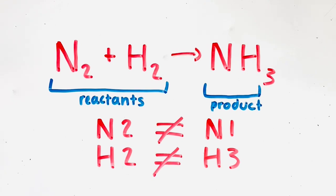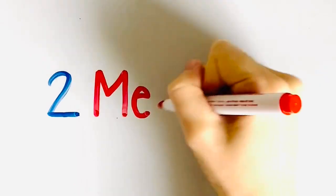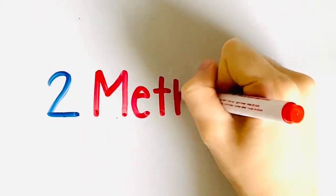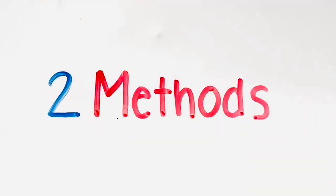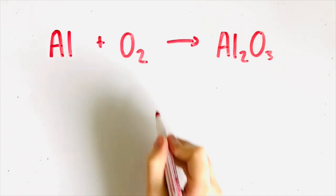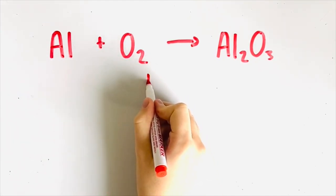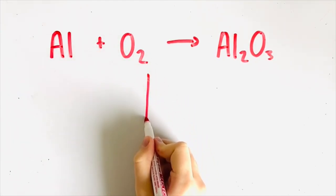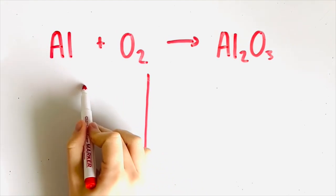We can change the amount of atoms by adding coefficients. We will teach you two quick methods to balance chemical equations. Firstly, we will explain how to balance Al + O2 yields Al2O3 using the table method.